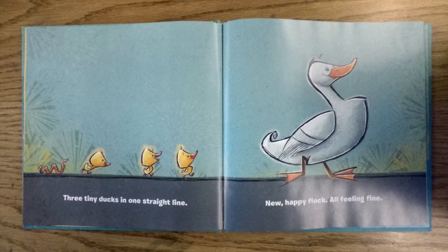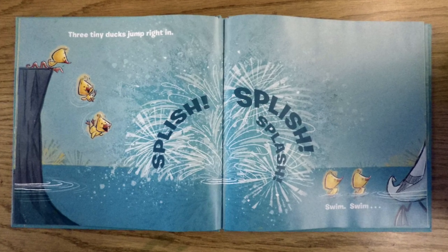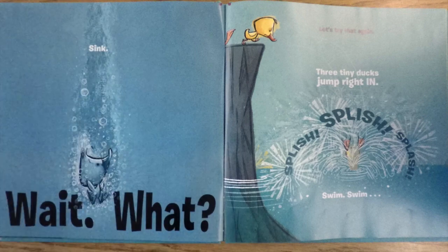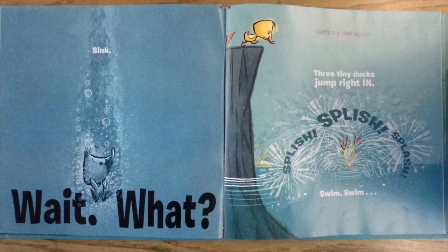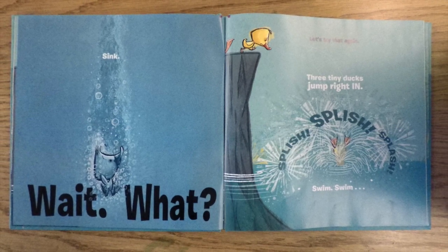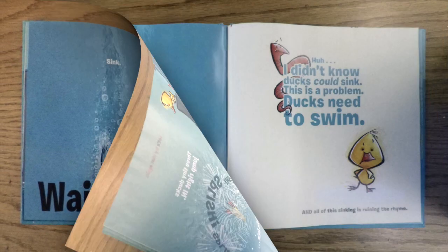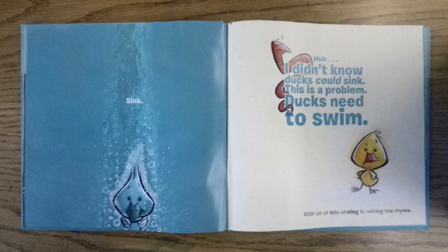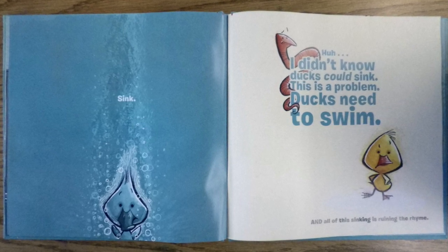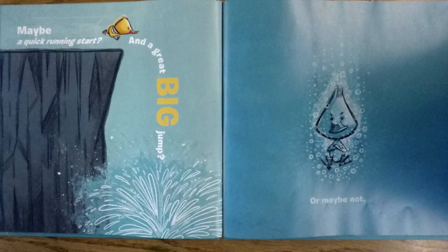Three tiny ducks jump right in, splish splish splash, swim swim sink. Wait, what? Let's try that again. Three tiny ducks jump right in, splish splish splash, swim swim sink. I didn't know ducks could sink. This is a problem. Ducks need to swim and all of this sinking is ruining the rhyme.